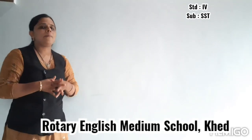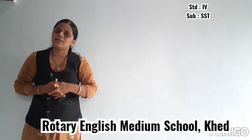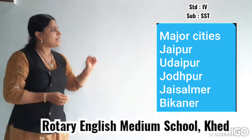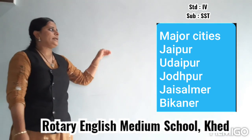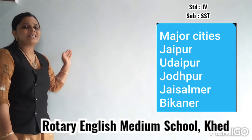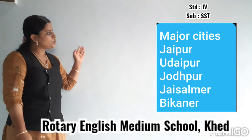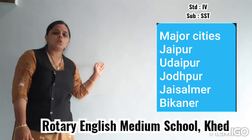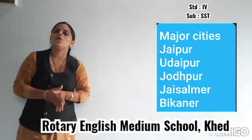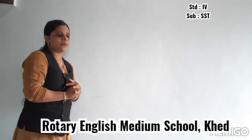Now let's talk about the cities. The desert is not entirely covered with sand — some places also have cities. The major cities and towns here are Jodhpur, Jaipur, Udaipur, Bikaner, Jaisalmer, etc. These are all major cities in Rajasthan.